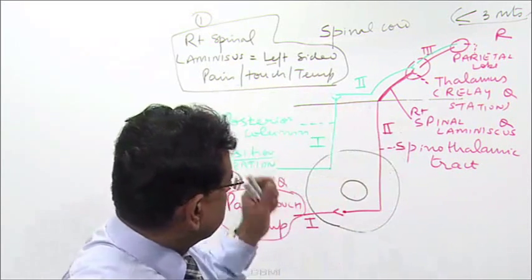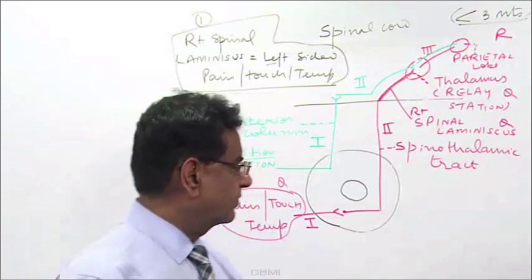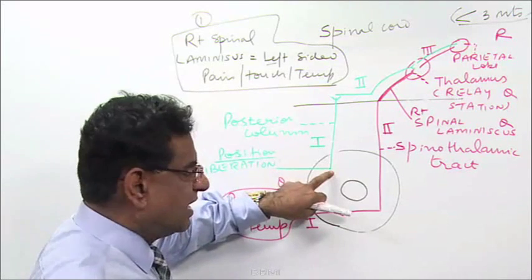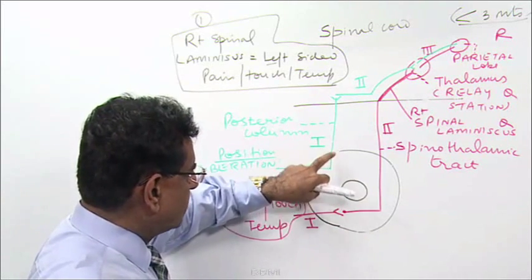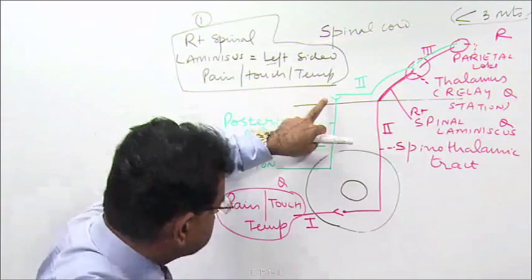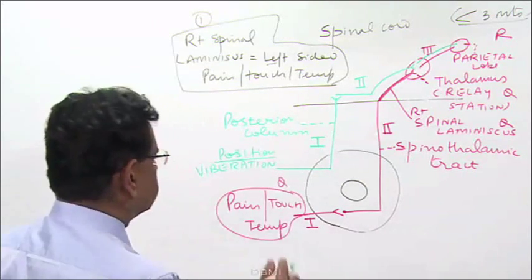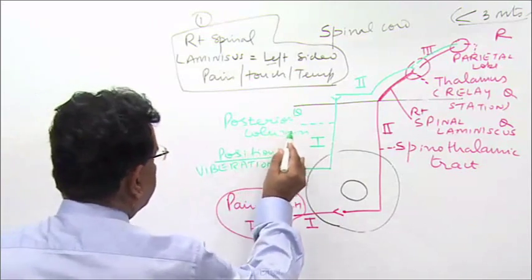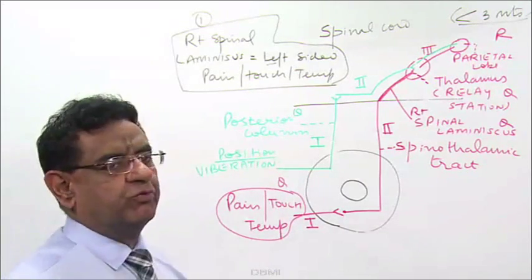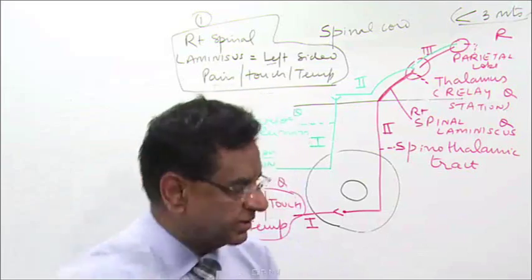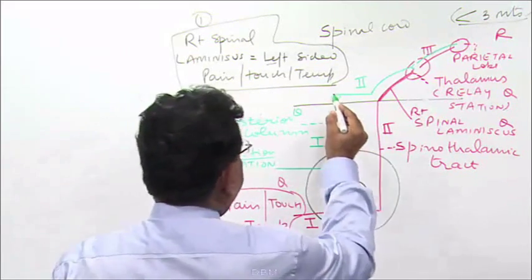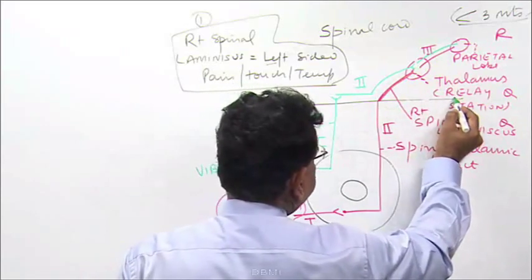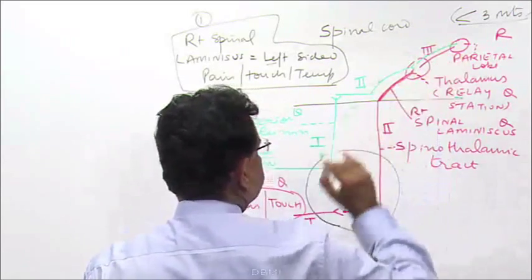Please write this down. Position and vibration sense enter the spinal cord without relay, then travel upward via the posterior column. This is an important exam question: the posterior column contains position and vibration sense. The second order neuron goes to the other side and relays in the thalamus, which is the relay station, and ultimately reaches the parietal lobe.